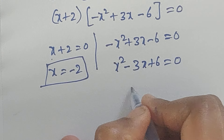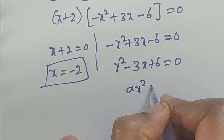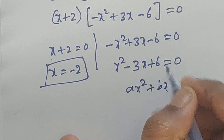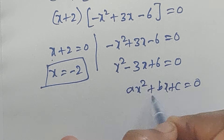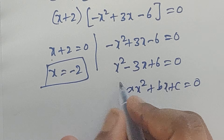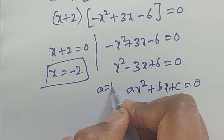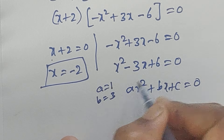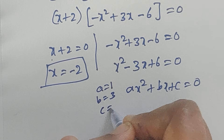Now this quadratic x squared minus 3x plus 6 equals 0 is in the form of ax squared plus bx plus c equals 0. Comparing these two equations we write: a equals 1, b equals minus 3, and c equals 6.